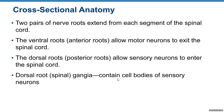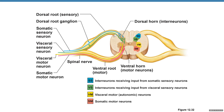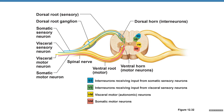Cross-section anatomy: two pairs of nerve roots extend from each segment of the spinal cord. The ventral roots, or anterior roots, allow motor neurons to exit the spinal cord — so in those front roots you have motor neurons. The dorsal roots, or posterior roots, allow sensory neurons to enter the spinal cord. Dorsal root ganglia contain the cell bodies of sensory neurons. So again: cross-section of the spinal cord, dorsal horn and ventral horn, dorsal root, dorsal root ganglion, and ventral root.